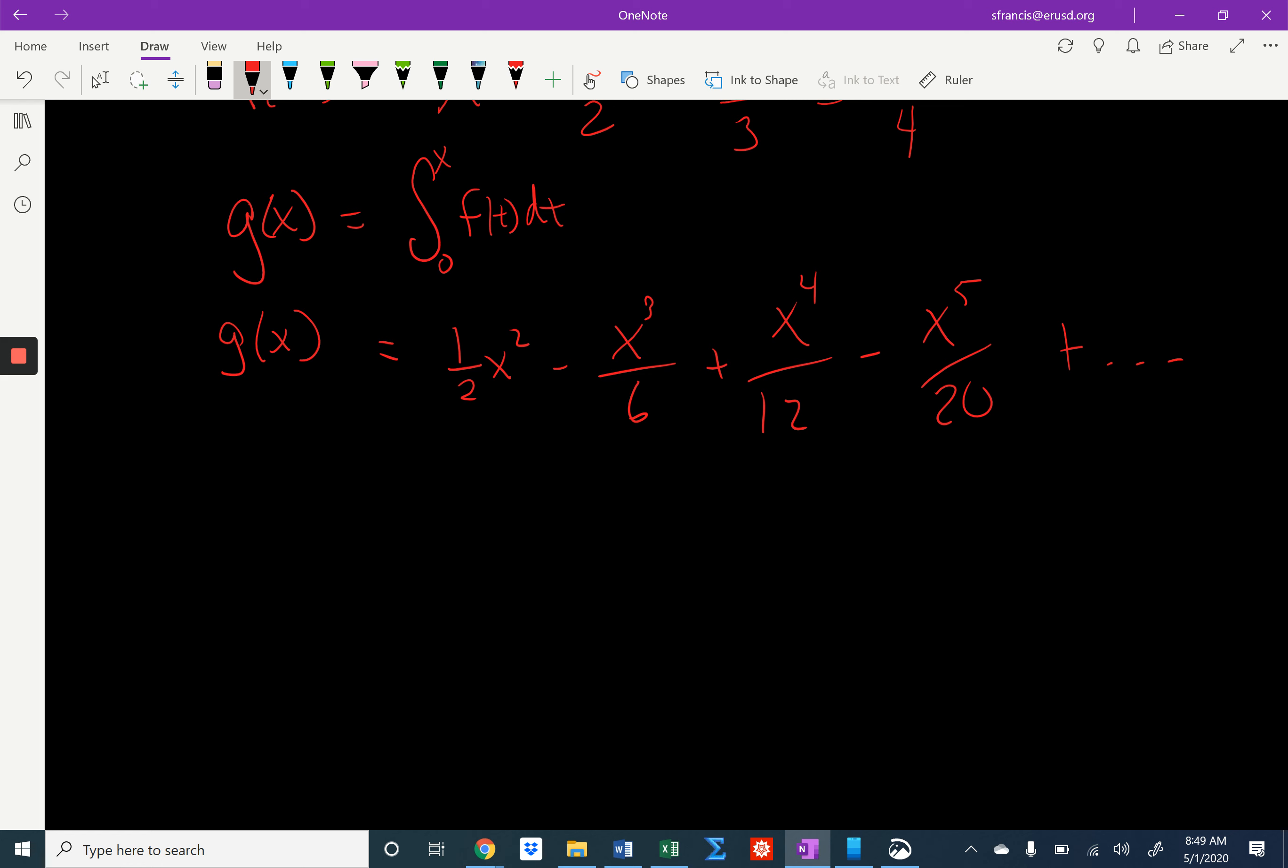Now, in Part D, they ask us to show that, using the alternating series estimation theorem, that the absolute value of p sub 4 of 1 half minus g of 1 half, that magnitude is less than 1 over 500.